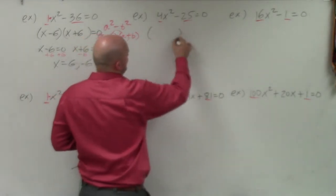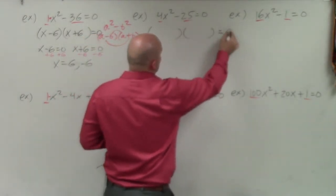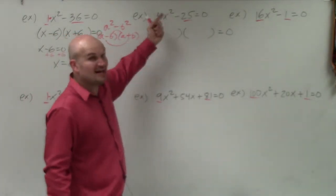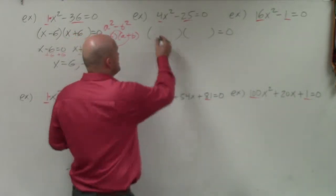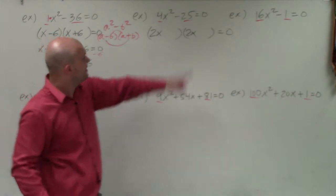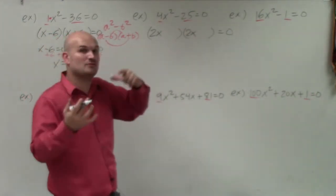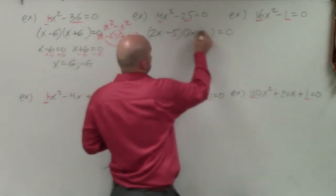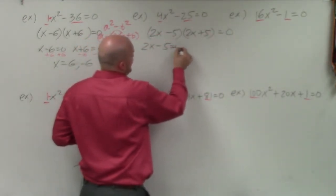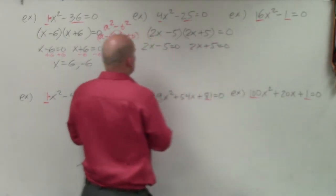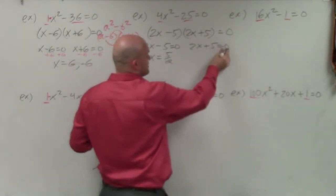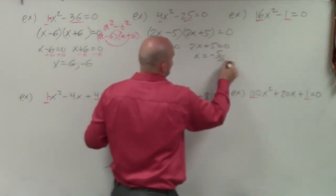In the next example, we do the exact same thing: determine what two terms multiply to give you your first term and your second term. My x squared has a coefficient of 4, but that's a square number, so 2x times 2x gives me 4x squared. For 25, since it's negative, one factor is positive and one is negative — giving minus 5 and plus 5. So 2x minus 5 equals 0 and 2x plus 5 equals 0, giving x equals 5/2 and x equals negative 5/2.